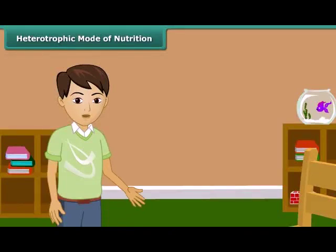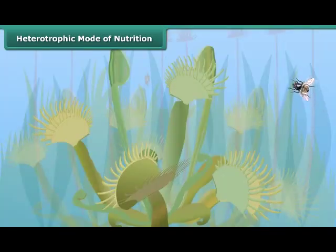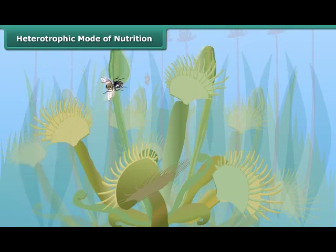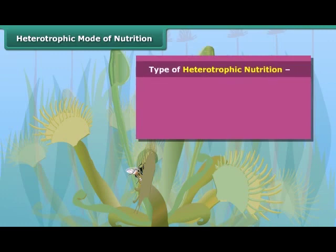Now let us know about those plants which do not have chlorophyll and cannot synthesize their food on their own. These plants derive food from other plants and animals, and this type of mode of nutrition is called heterotrophic mode of nutrition. The plants in which this kind of mode of nutrition is found are known as heterotrophs. There are four types of heterotrophic plants.